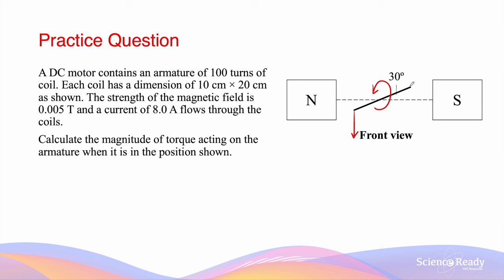What we need to find is the angle between the force vector and the plane of the armature. If we draw a horizontal line, we can see this angle is also 30 degrees.